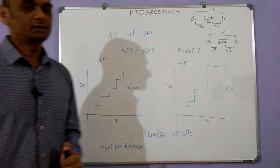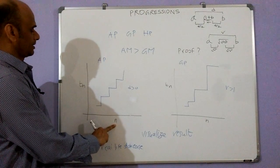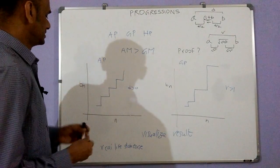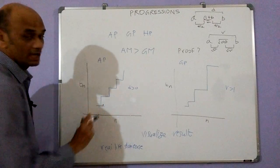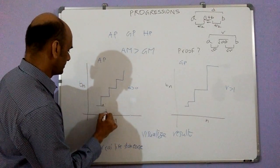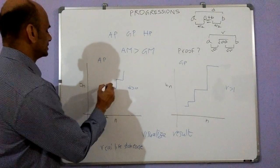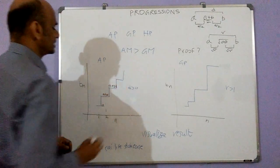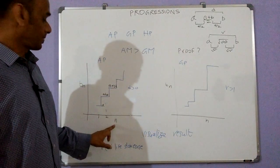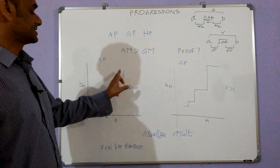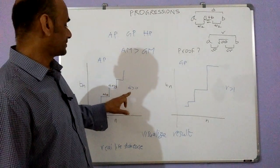One way of visualizing arithmetic progression is if you draw the value of the term versus the term number. The plot will form a graph like a staircase. At n = 1, the value is a; the second term is a + d; the next is a + 2d. The staircase is going up because we assume the common difference d is greater than 0.